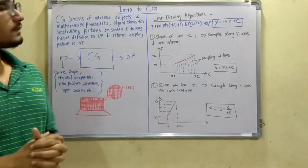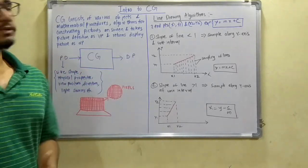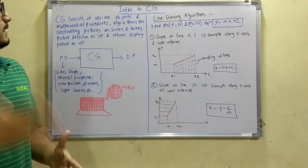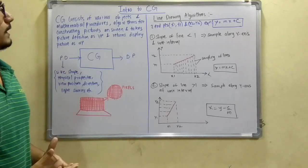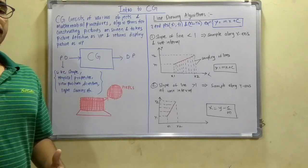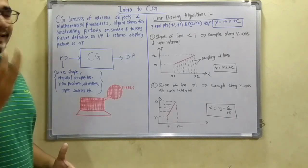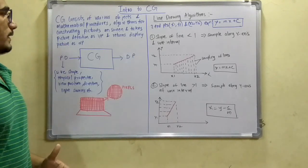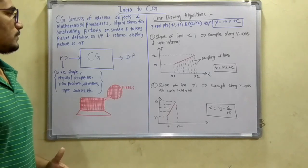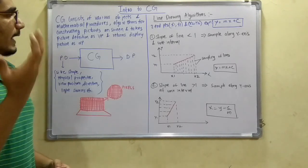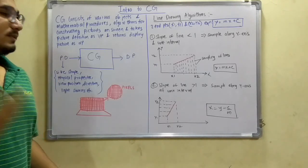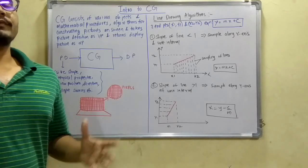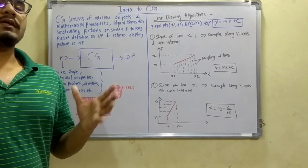So let us see what is computer graphics. The actual definition is that CG mainly consists of various objects and mathematical procedures, the algorithms for constructing pictures on the screen, taking the picture definition as its input and returns the display picture as its output. This entire thing is based on mathematical concepts.